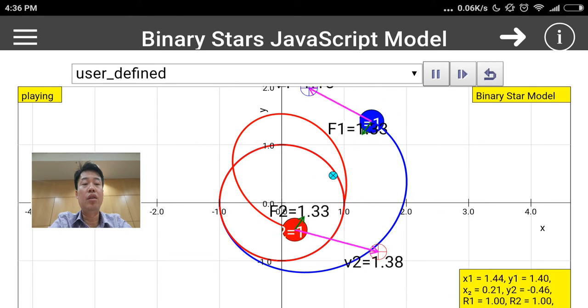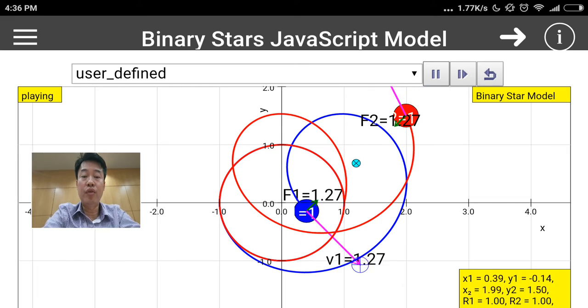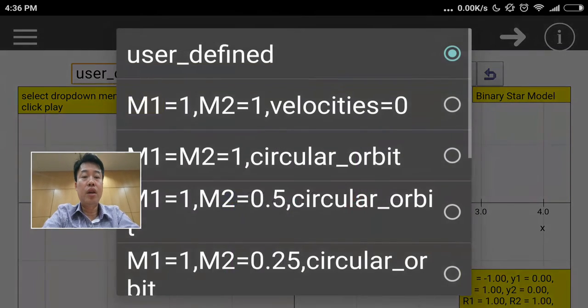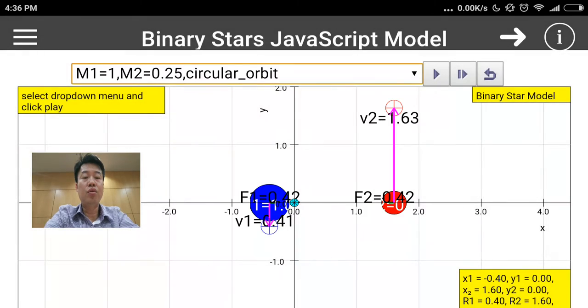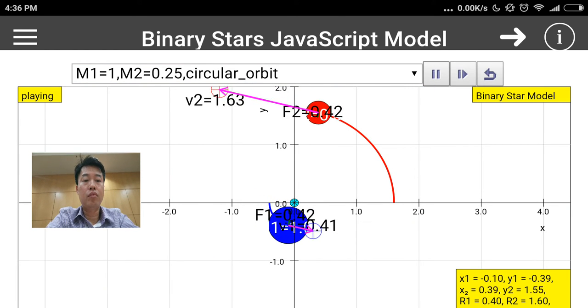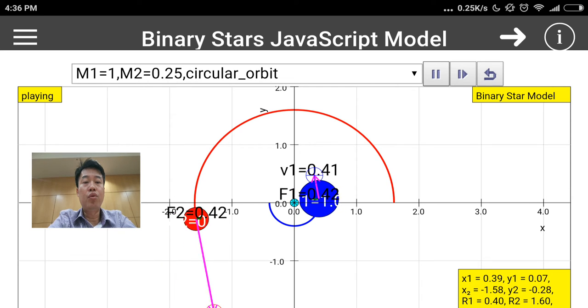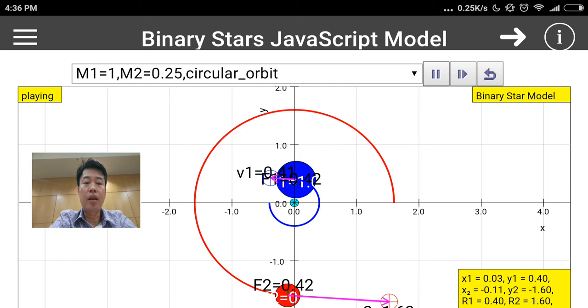Let's look at some interesting cases. M1 equals 1, M2 equals 0.25 circular orbit. If you look at this particular setup, circular orbit is indeed possible.